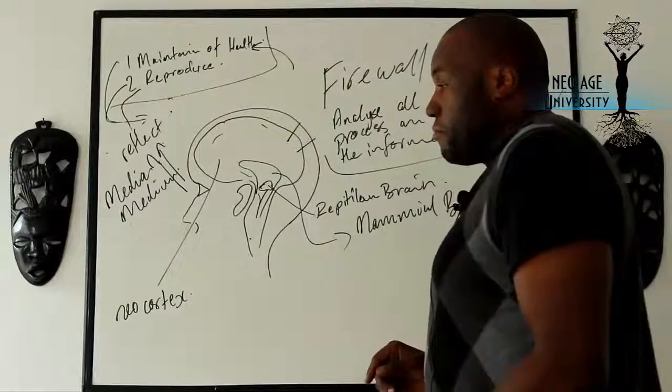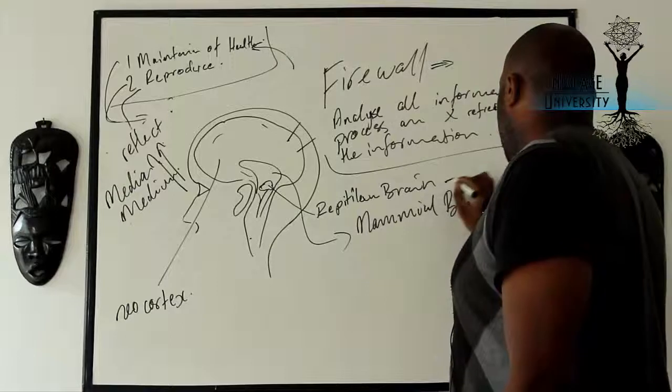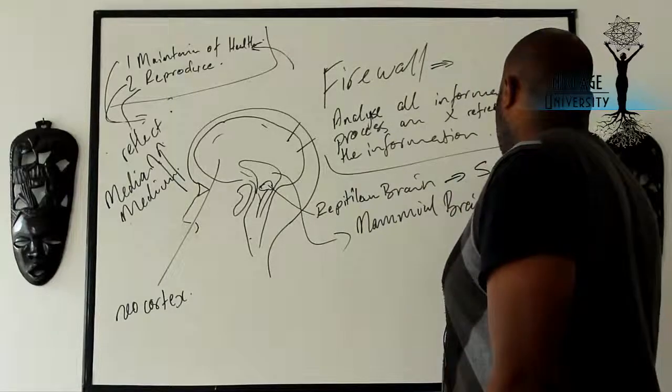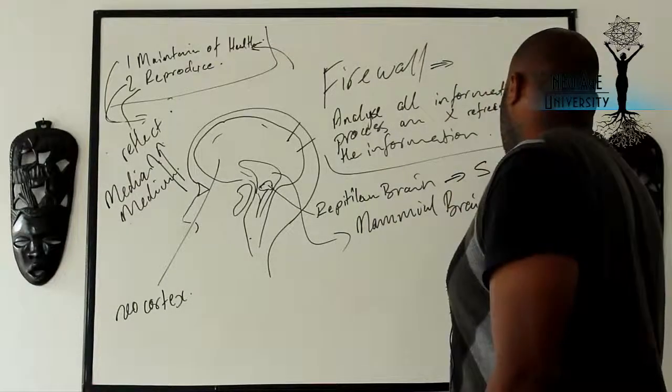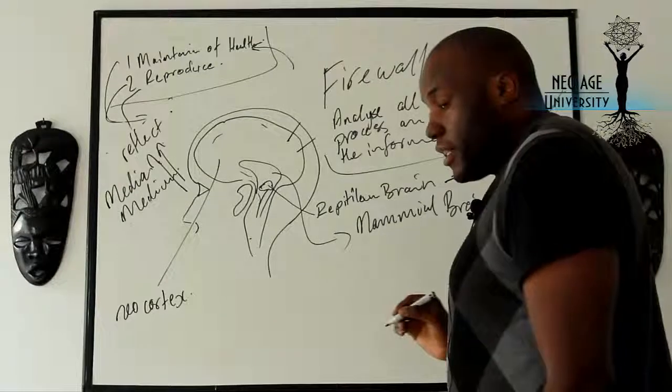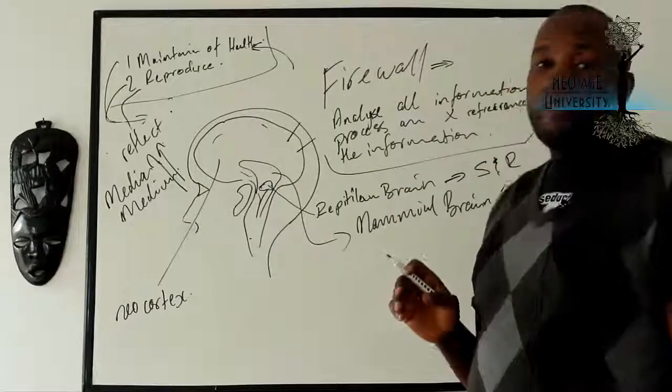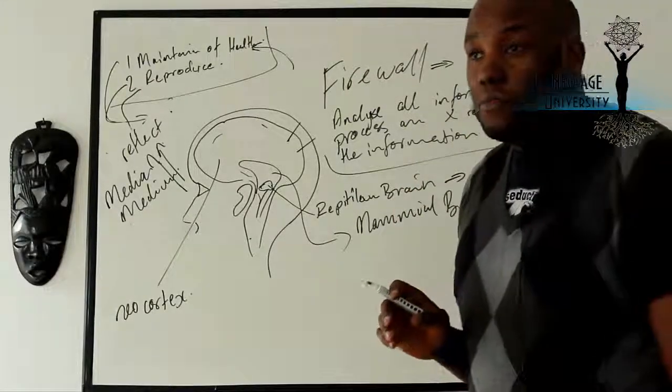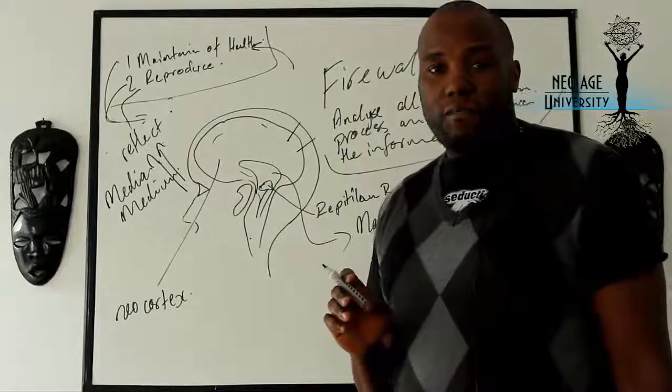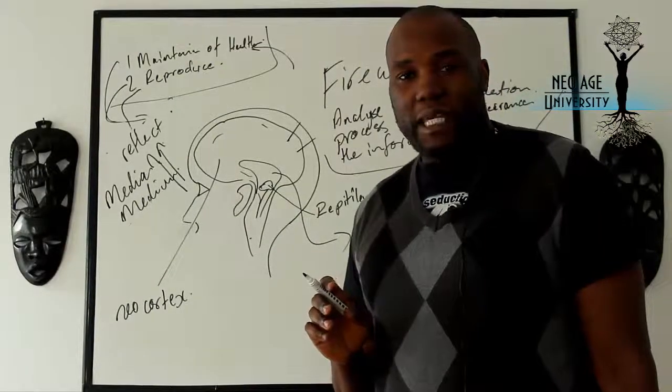The reptilian brain is in charge of survival, direct survival, and replication. That's the reptilian brain's function. This part of the brain is the most vicious part of ourselves that we would ever see. We try to keep it tamed, but we can't keep it tamed.